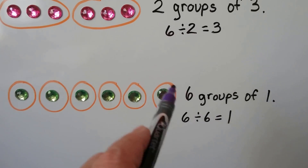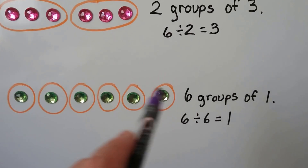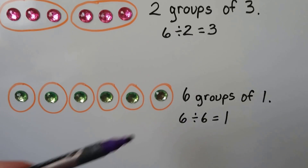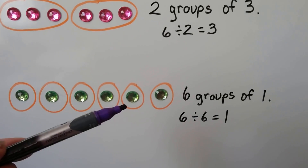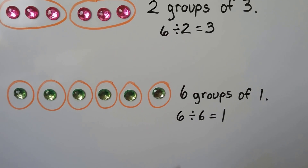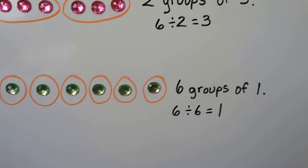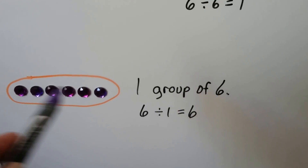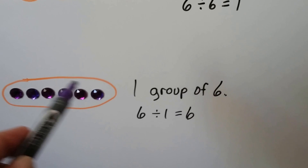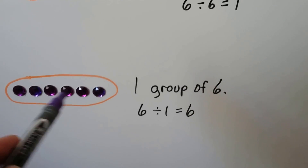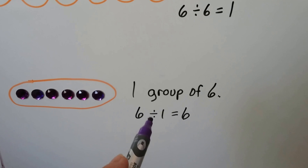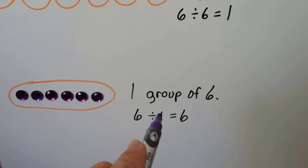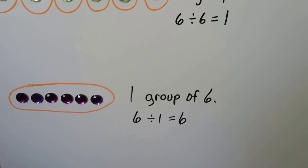Now we have six counters, but we made six groups with one in each group. If we have six in all and we make six groups, there's going to be one in each group — six divided by six equals one. Now we just have one group of six. If we have six and we make it all into one group, there's going to be six in the group, so six divided by one equals six. That second number, the divisor, tells us how many groups.